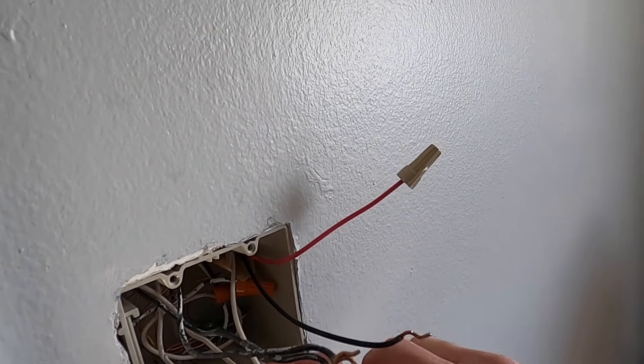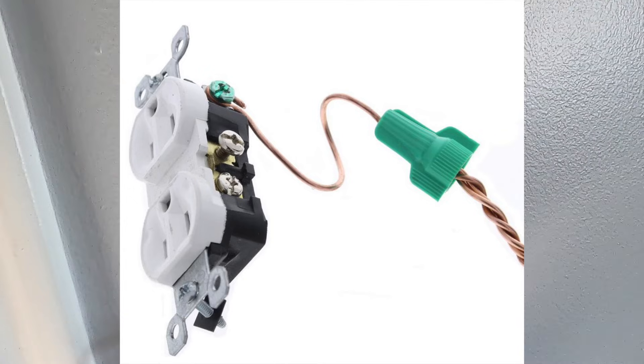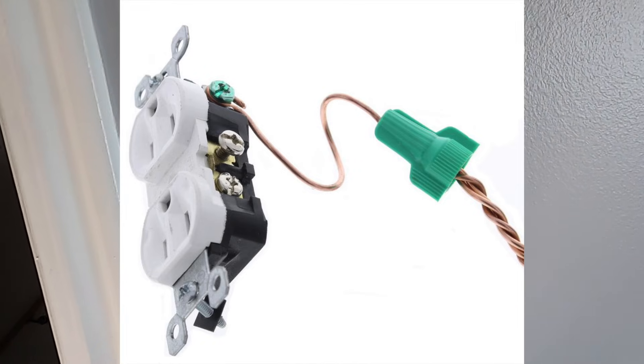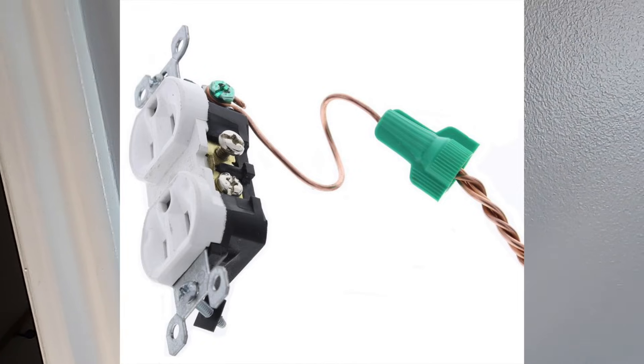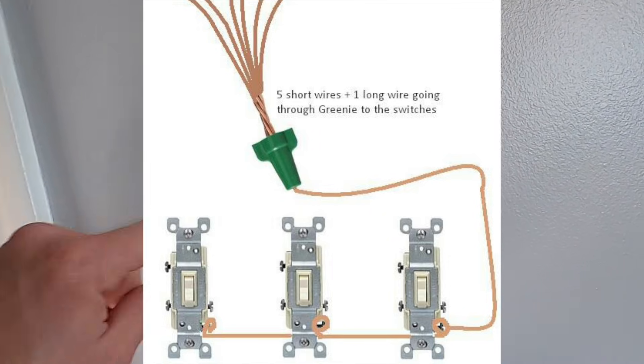So first I'm going to start with the ground. All the ground wires go together. The old school way of doing this is using these ground nuts. They're green nuts that have a hole on the end and you slide them up to connect all the grounds and then the remaining tail outside of the ground connects to each of the switches.